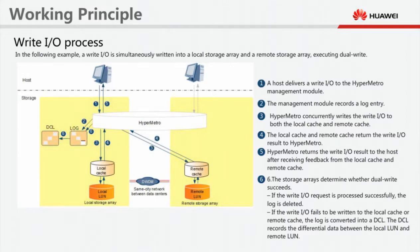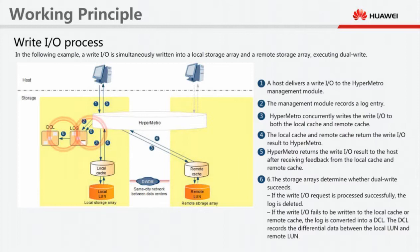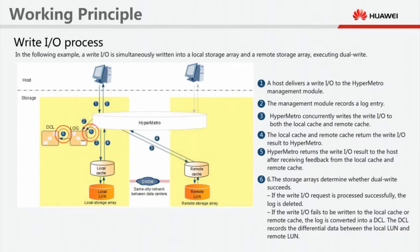Step 7: The working storage array uses the data change log to synchronize data in the background. Step 8: After the data on the local LAN is the same as that on the remote LAN, HyperMetro services are restored.